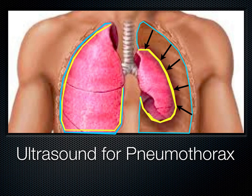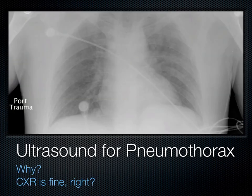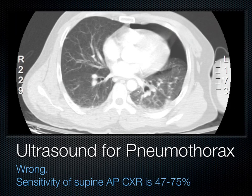Moving on to ultrasound for pneumothorax. We all know that a pneumothorax occurs when the visceral and parietal pleura have separated and air collects between the two layers, allowing the lung to collapse. So why not just do a chest X-ray? This is a trauma film — the patient is likely on a backboard and supine. You don't see a pleural line and there doesn't appear to be a problem, but this patient got a CT scan showing a very significant left pneumothorax not picked up on the plain film. This is not uncommon — the sensitivity of a supine AP chest X-ray for pneumothorax is around a coin flip, with the best study showing about 75% sensitivity.